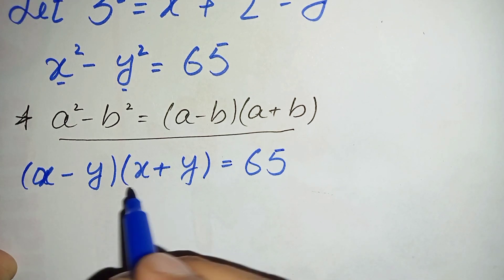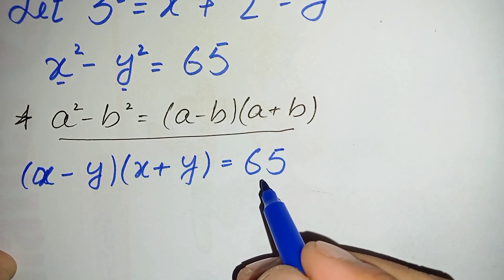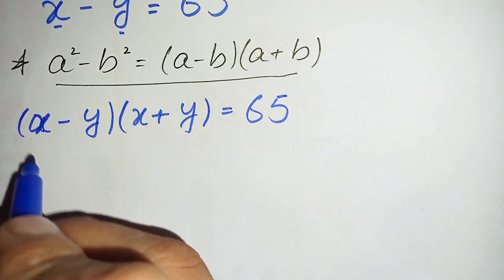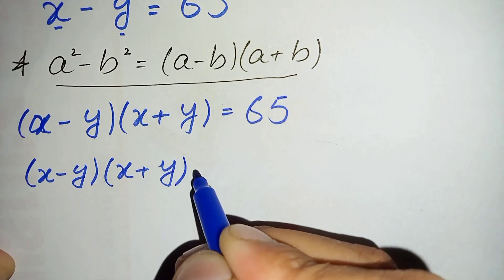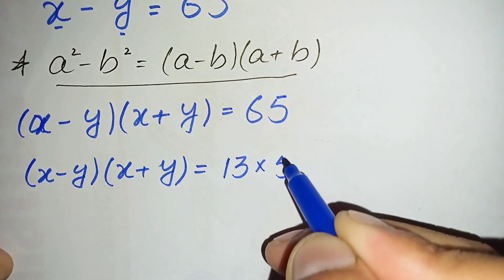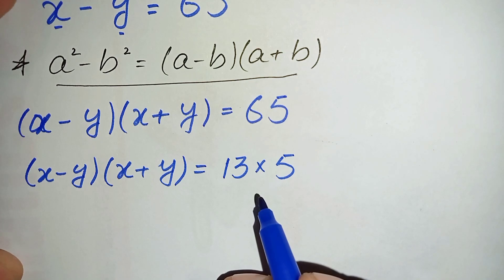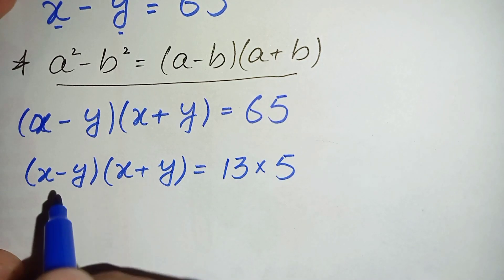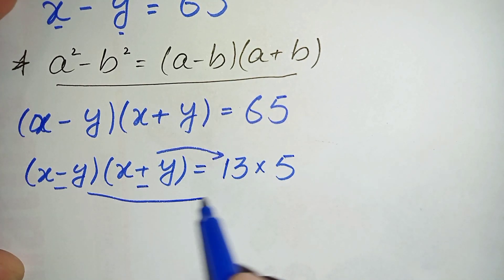Now look at the left hand side — it is the product of two expressions: x minus y times x plus y. We will factorize the number 65 on the right hand side into the product of two numbers and then compare. So we factorize 65 as 13 times 5. For any two numbers x and y, x plus y will always be greater than x minus y, so we compare x plus y with the greater number 13 and x minus y with the smaller number 5.